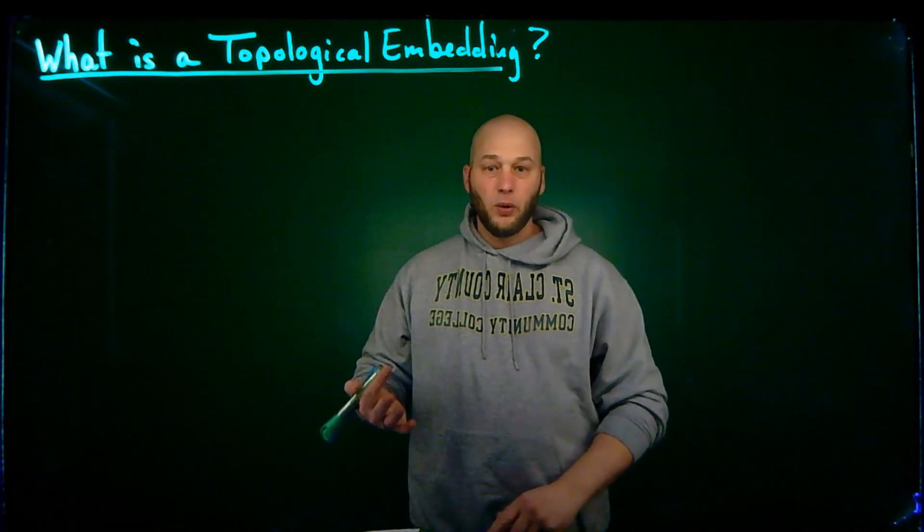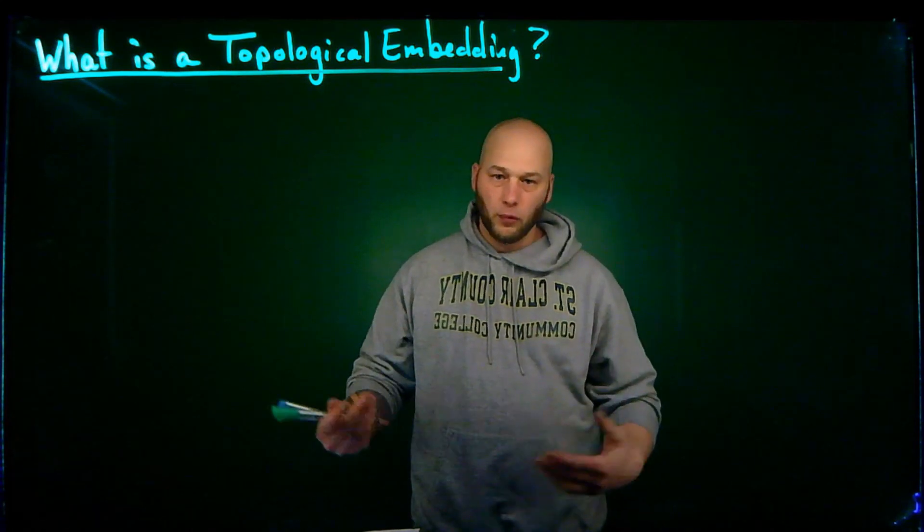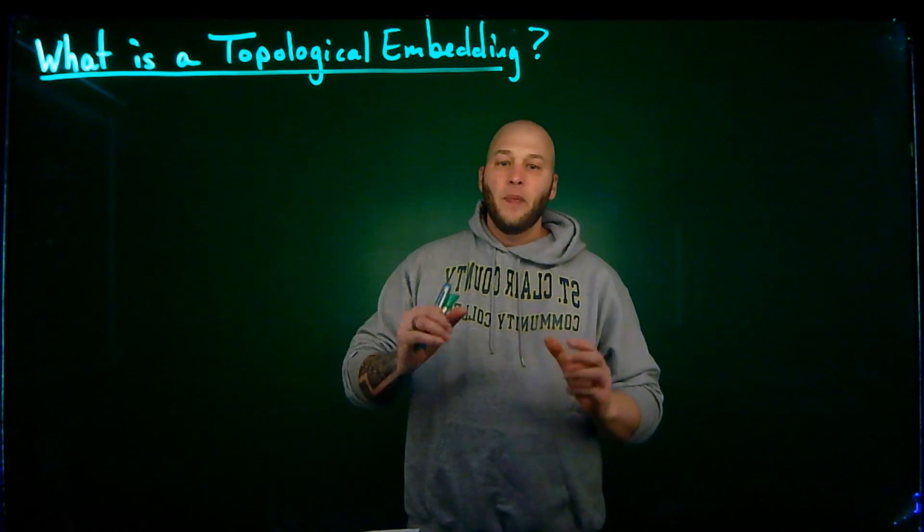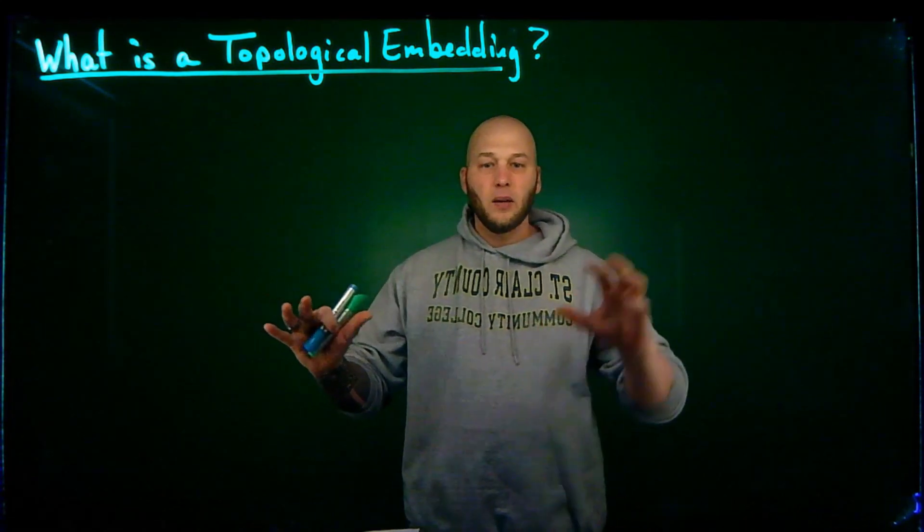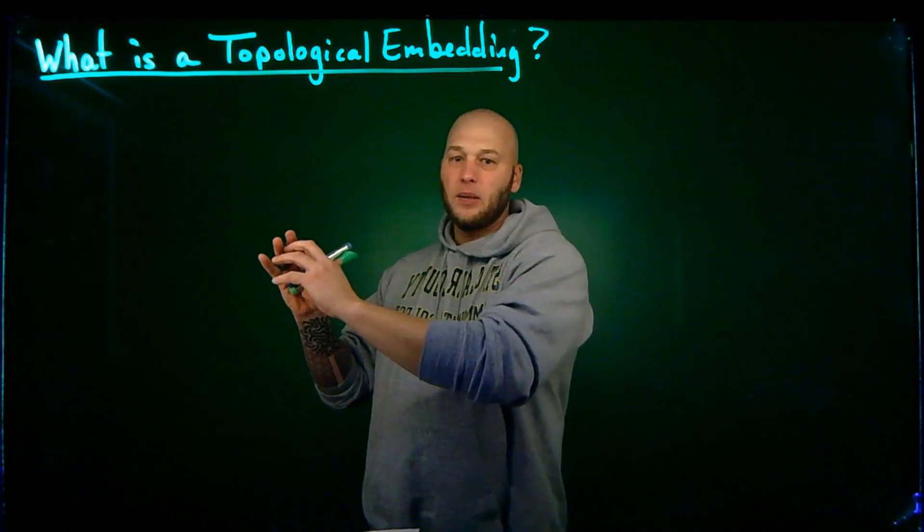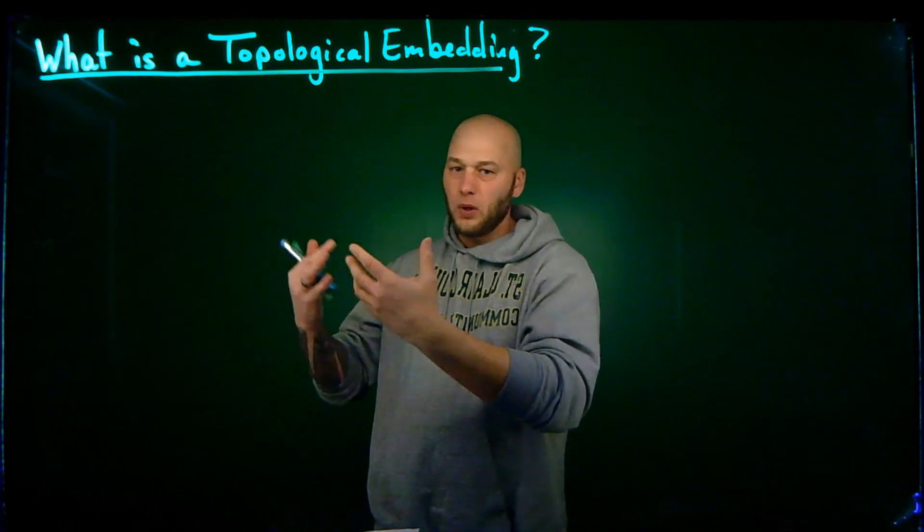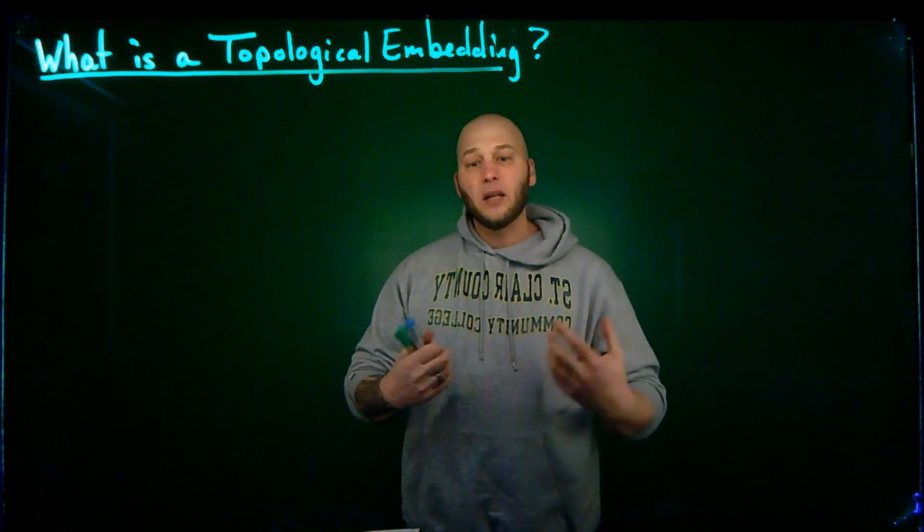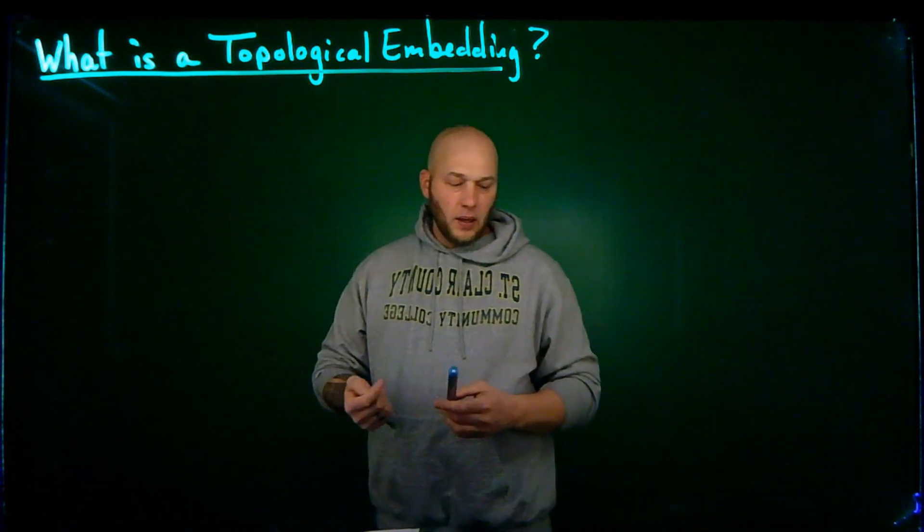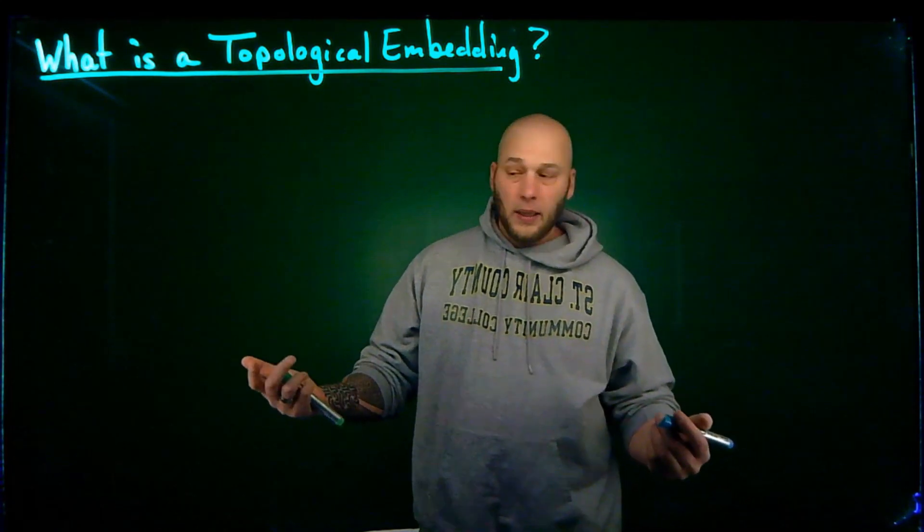Whether that is a topological space or whether it's an algebraic structure like a group or a field or ring. What I'm doing is I'm basically finding a structure within another structure, or I'm taking a structure over here and I'm somehow mapping it homeomorphically, isomorphically, whatever algebraic or whatever structure I'm working with into another one. And topologically, we can think of this a little bit more geometrically than we can with, say, a group or a field.